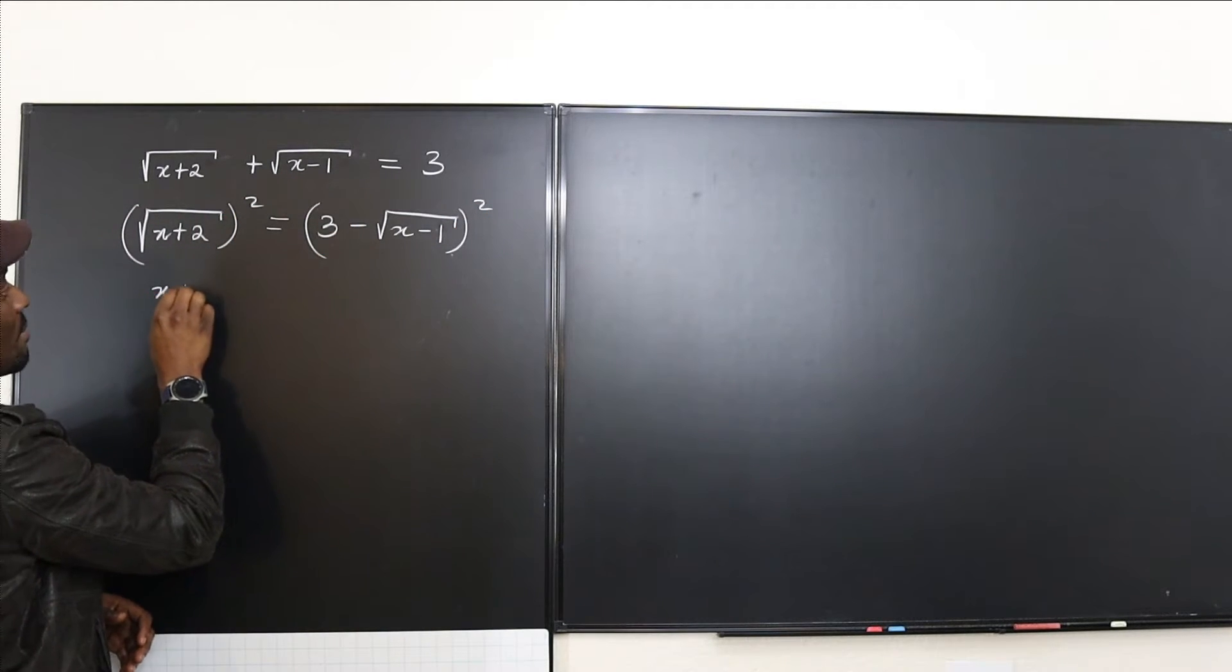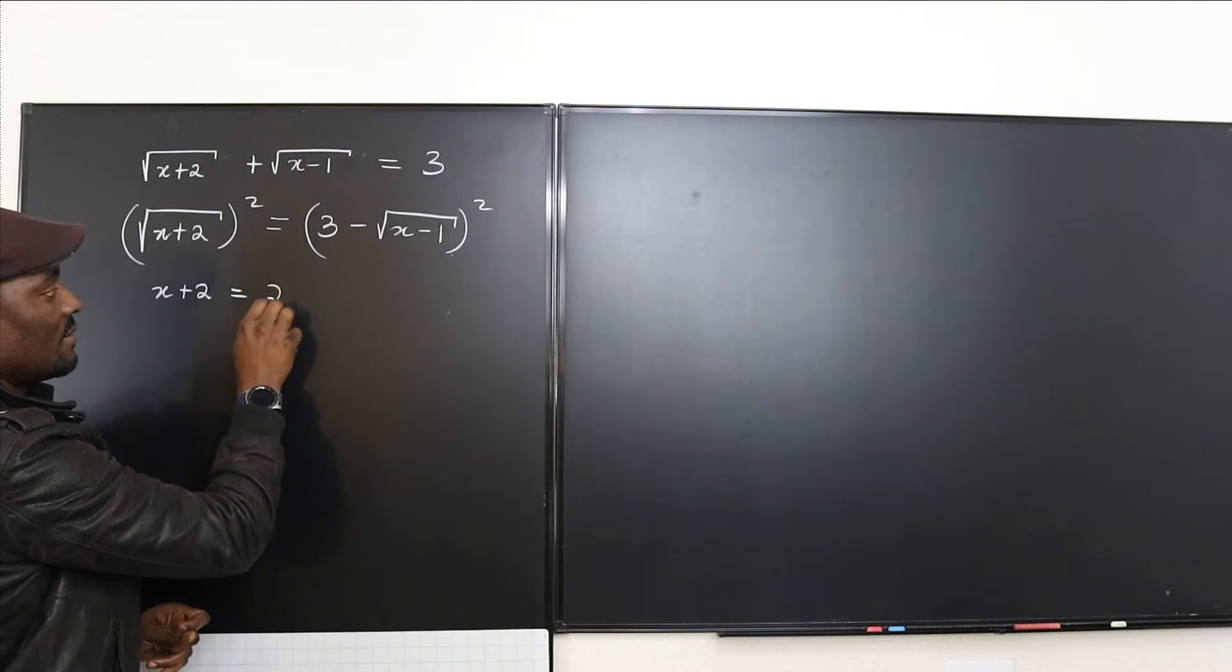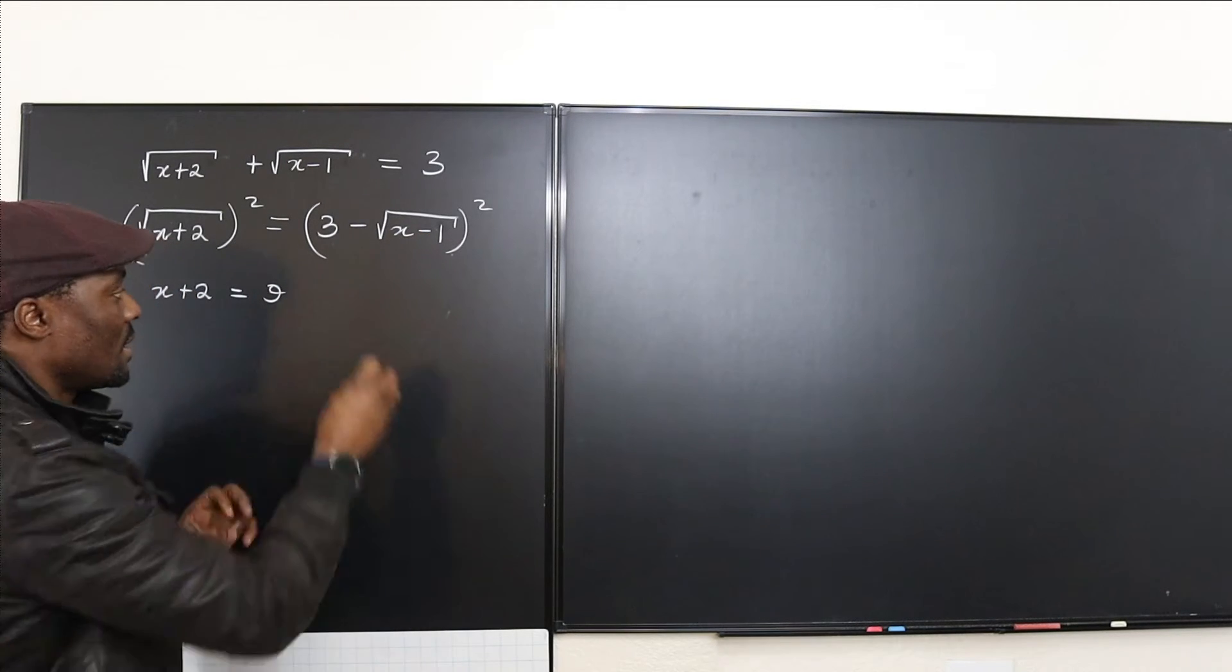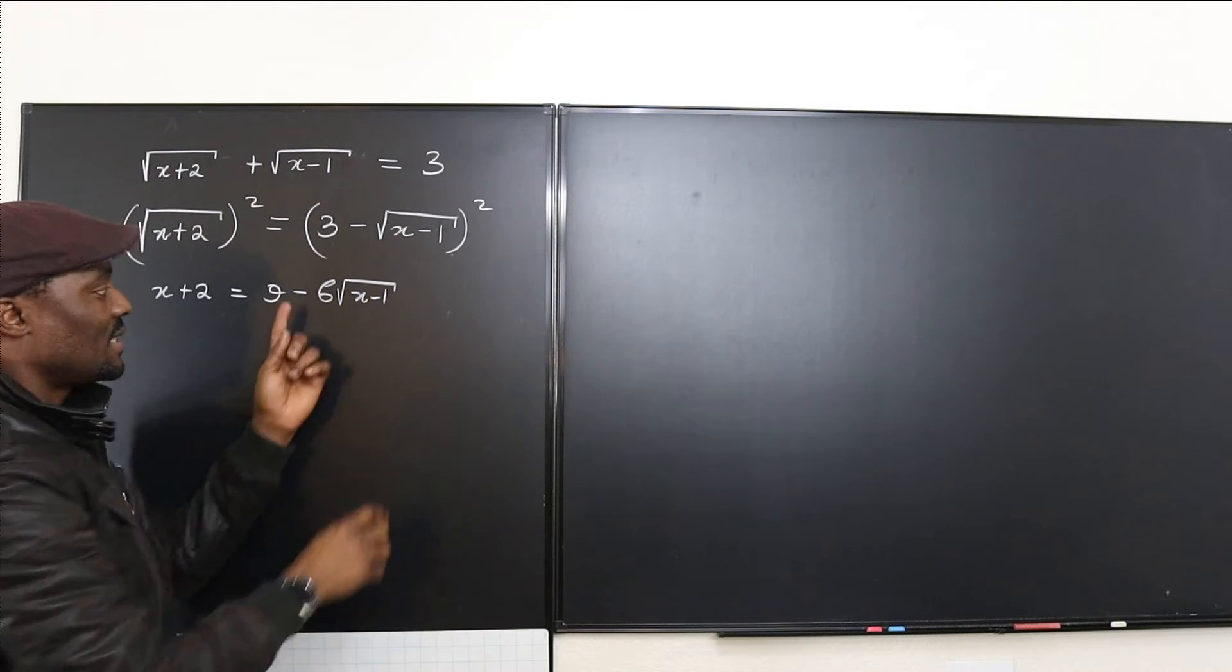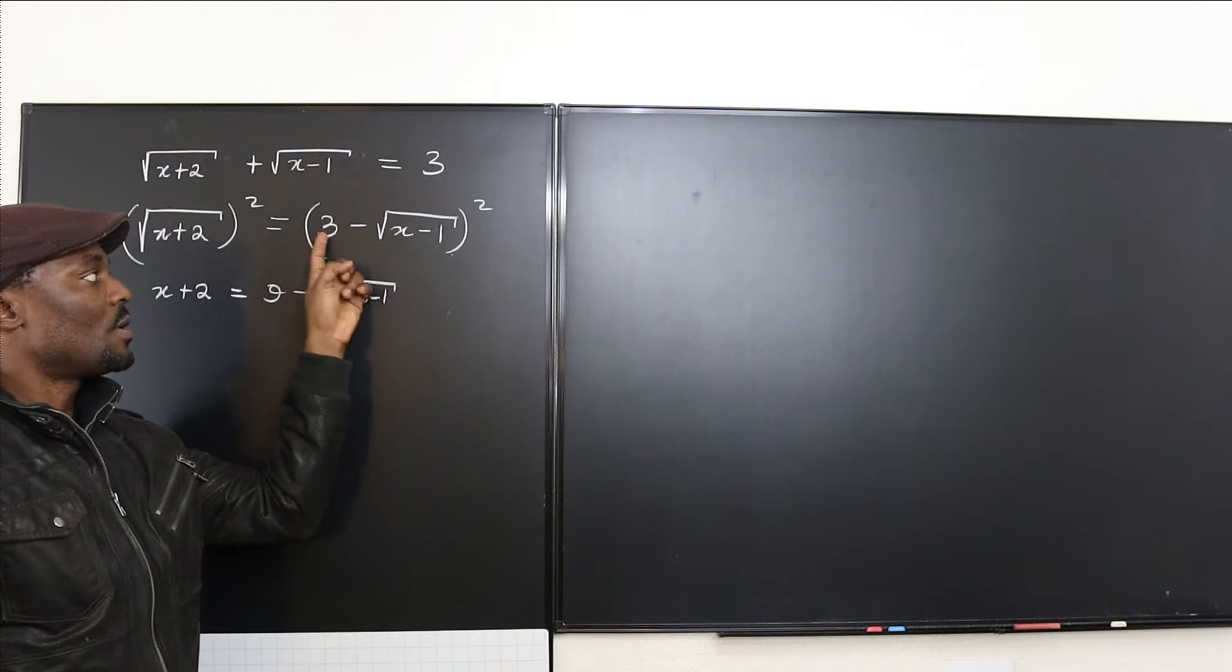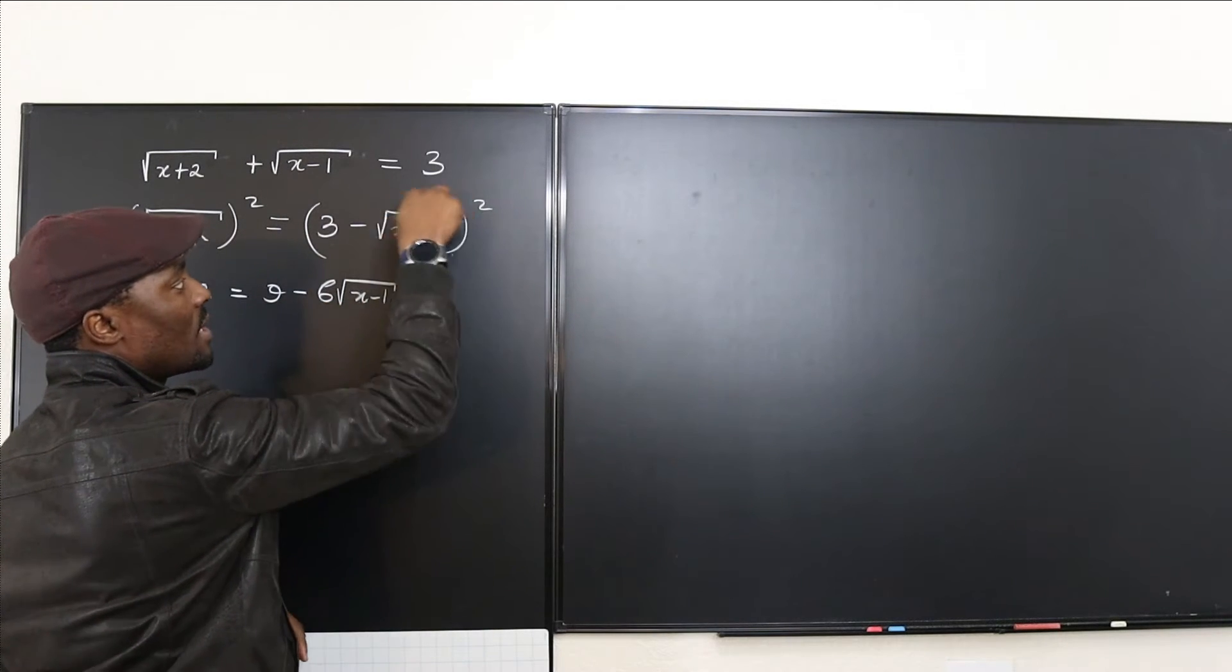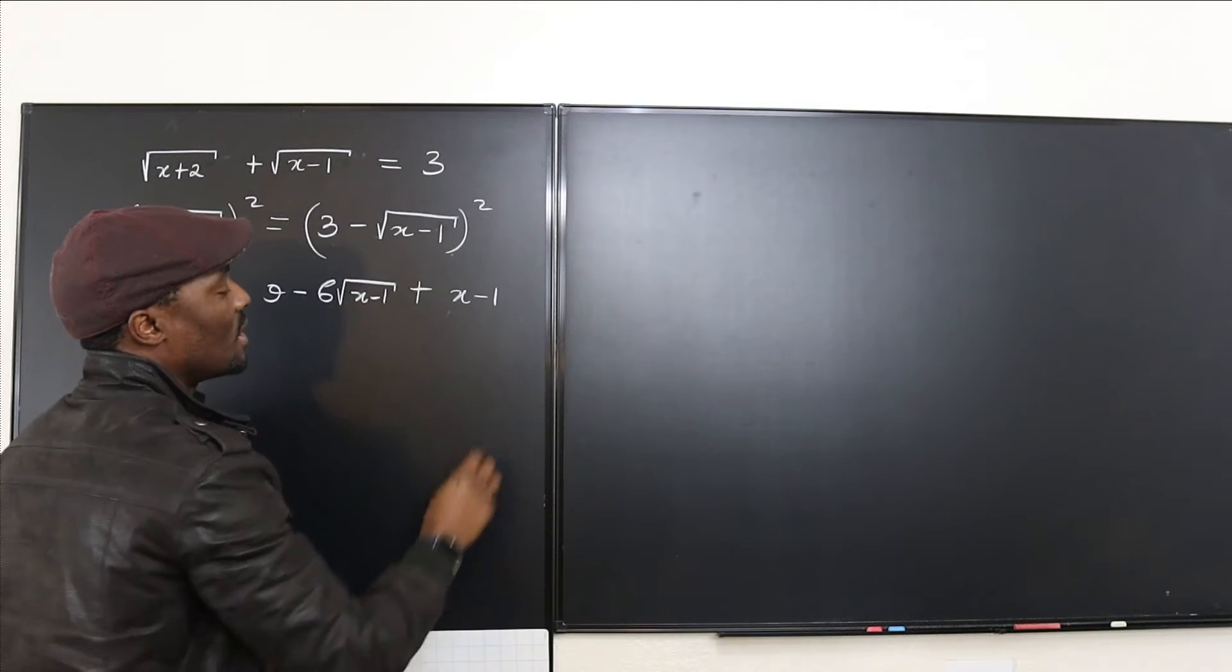This is going to leave us with x plus 2. And when we square both sides, firstly, we're going to square this and that's going to give us 9. And then 3 times this, it's going to be 3 rad x minus 1. But you do that twice. So that's going to be minus 6 rad x minus 1. This is a skill you need to learn: when you multiply whatever is here by this, you double it. And then when you square this last term, this sign is going to become positive when you're left with x minus 1.